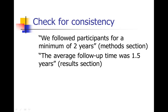Checking for consistency means making sure you don't have things that are totally contradictory in different parts of the manuscript. This happens often. I was recently editing somebody's work and in the methods section they said we follow participants for a minimum of two years. Then later in the results section I read the average follow-up time was 1.5 years. If every participant was followed for more than two years, how could the average be 1.5 years? It didn't make any sense. They probably meant their goal was two years — a little inconsistency.